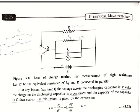In this circuit, C is a capacitor of known capacitance. V is an electrostatic voltmeter, and R1 is the total leakage resistance of the capacitor and the voltmeter. R is the resistance to be measured.